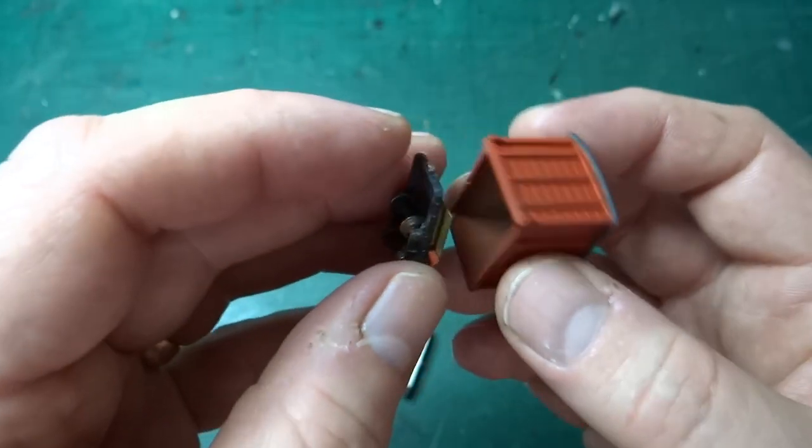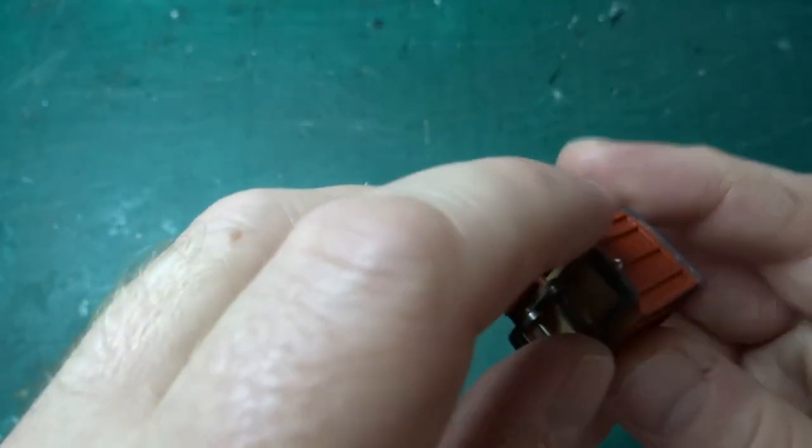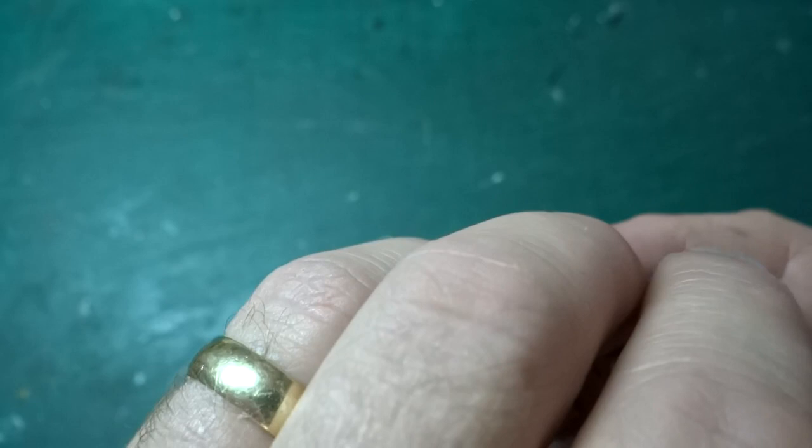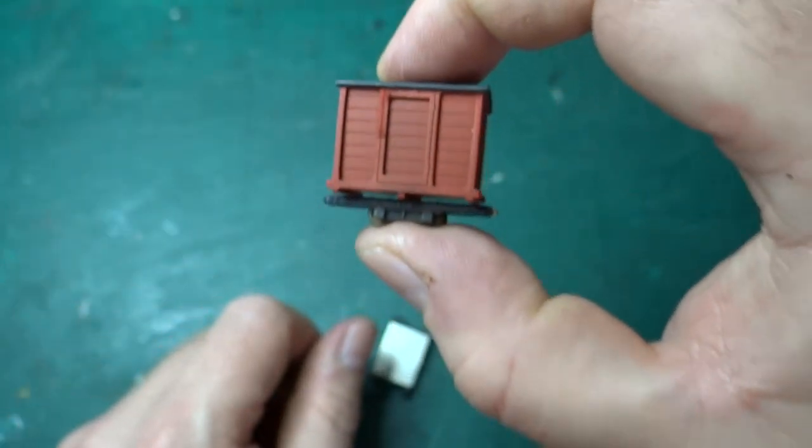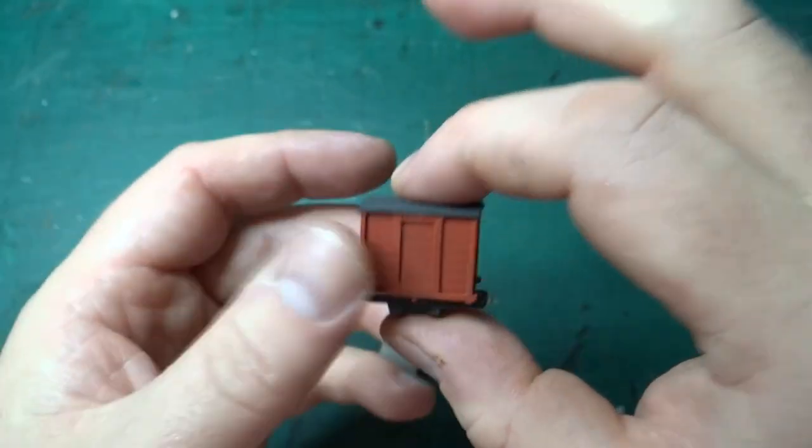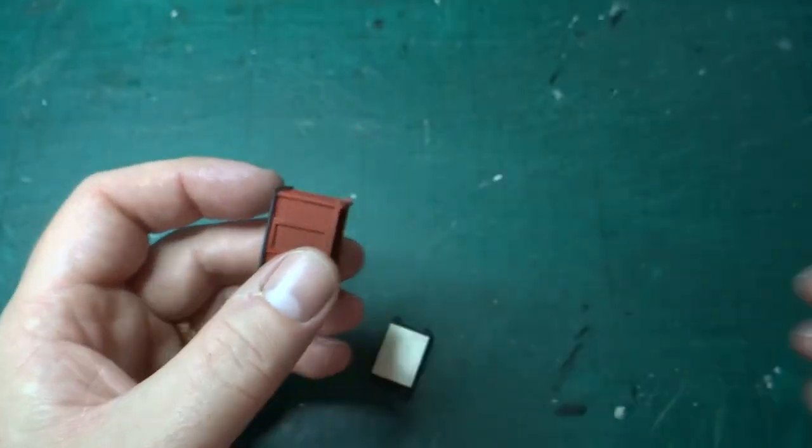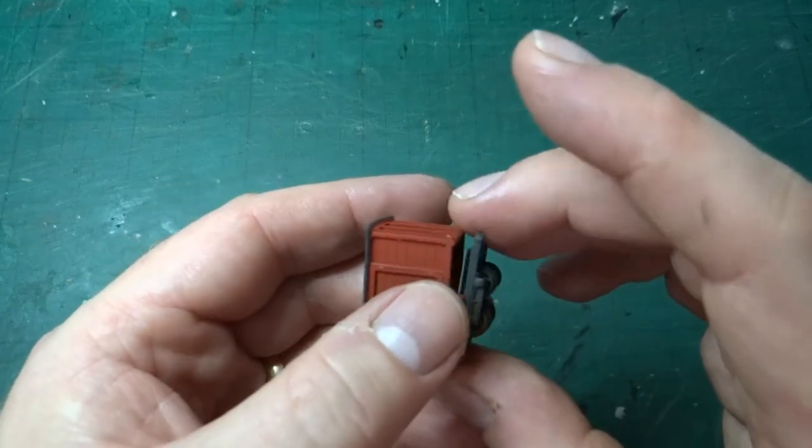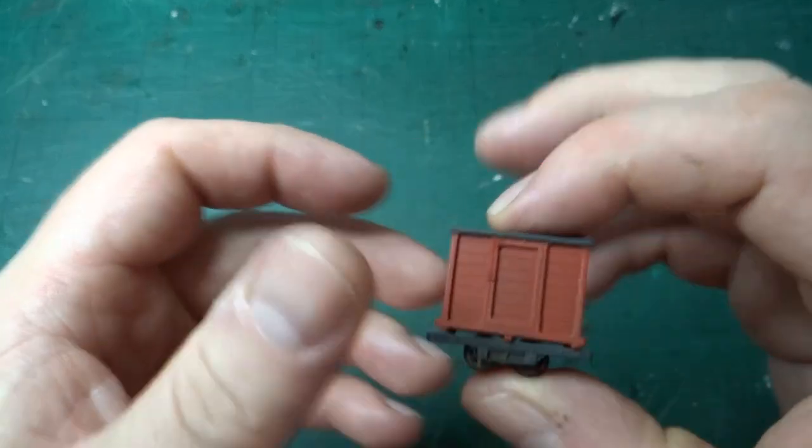You can see it just fits in the bottom in place of the nine millimeter one. Obviously you'd build it for one gauge and then glue in the chassis that you wanted. Mine tends to be stored with the nine millimeter version because that's where I've used it most.